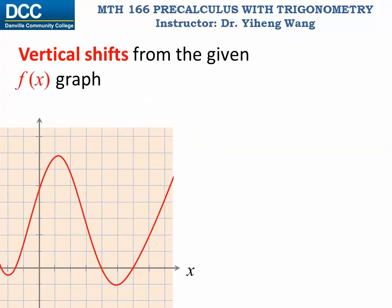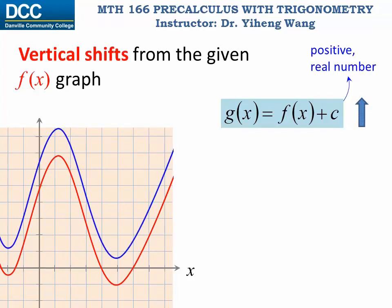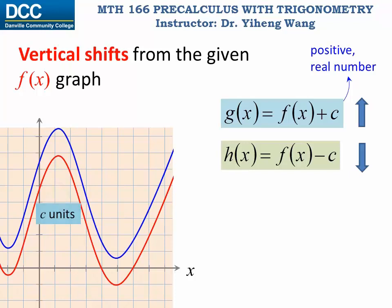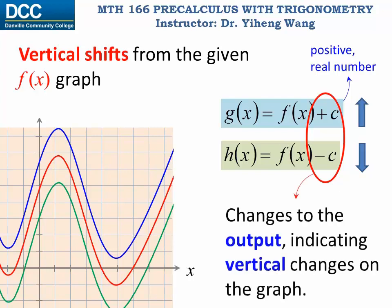From the previous exercise problems, here is a summary of vertical shifts. Based on the graph of f, if we want to sketch g(x) = f(x) + c, where c is a positive real number, we shift the existing f graph vertically upward by c units. If we want to sketch h(x) = f(x) - c, we shift the f graph vertically downward by c units. These changes are applied to the output of the function, which indicates vertical changes on the graph.